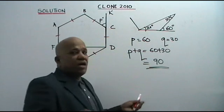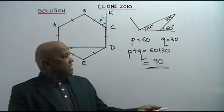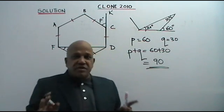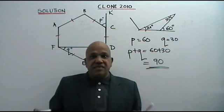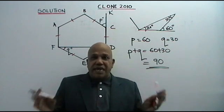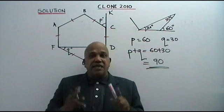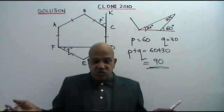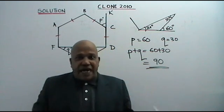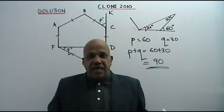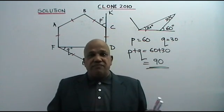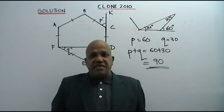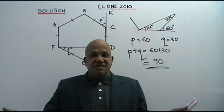Super easy. All you have to do is remember the important values, the important angle theorems, and everything about regular polygons — including the formulas for exterior angle and interior angle. I'm sure you can score an A in the coming PMR if you focus and practice, practice, practice — makes perfect. Thank you.